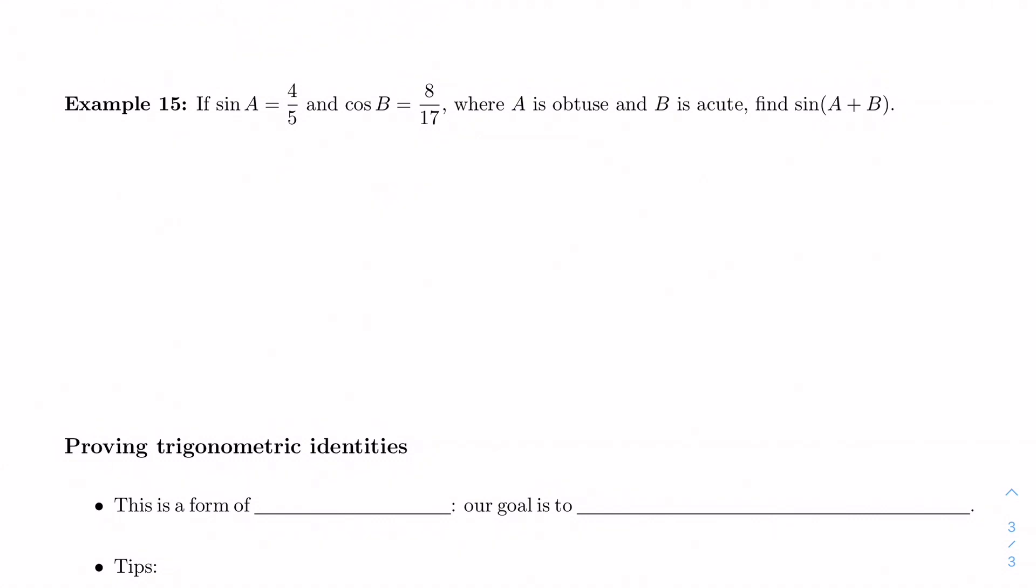Sine A equals 4/5. Cosine B equals 8 over 17. And we're told, let's start highlighting some things, we're told that A is obtuse and B is acute. And we want to find sine of A plus B. There's a lot going on here. So let's start to pick it apart.